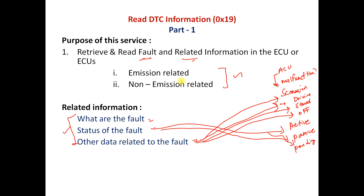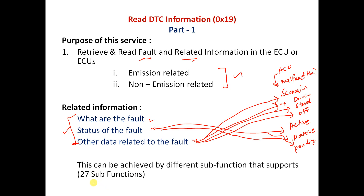So how can all this fault and related information be retrieved? By using 27 sub-functions — we have 27 different sub-functions. These sub-functions are not only for retrieving faults; for example, if a diagnostic engineer clears the DTCs, there is also a backup mechanism handled inside this service using a different sub-function. We have created a dedicated playlist for this, and from the next video we will start learning each sub-function one by one.